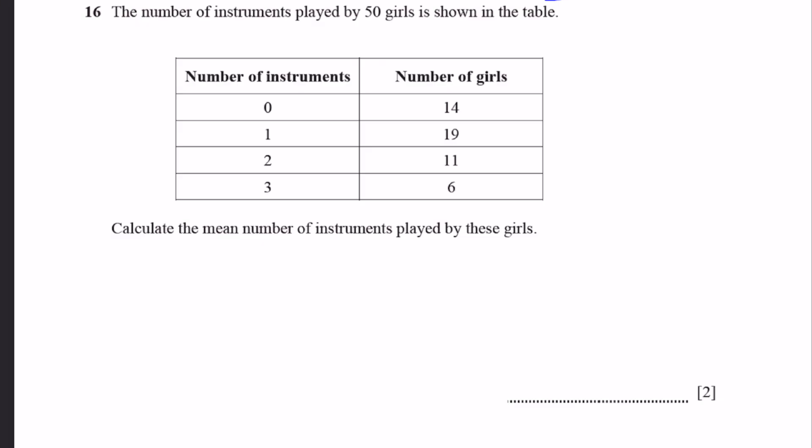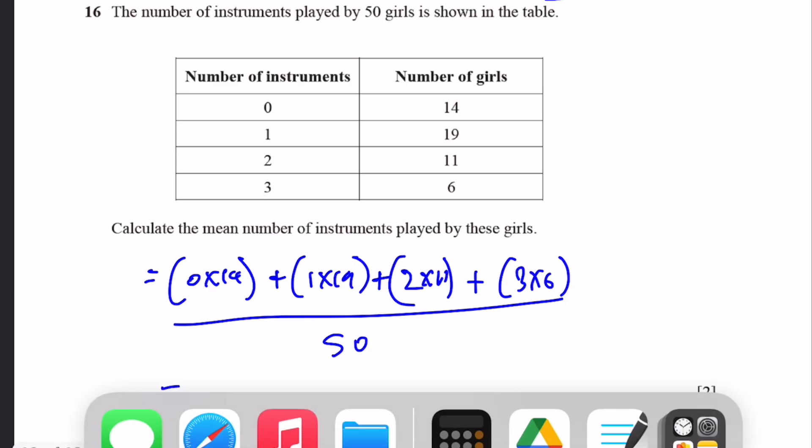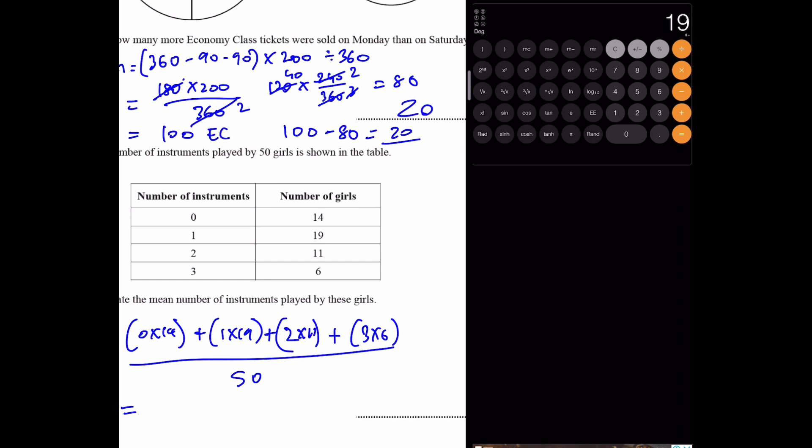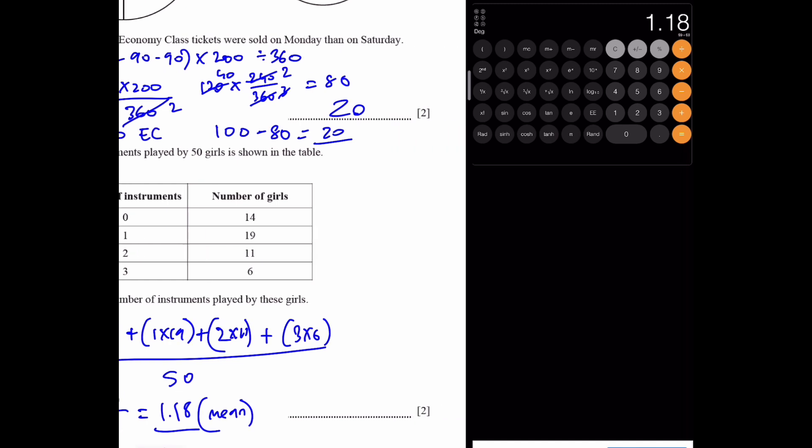Question 16. The number of instruments played by 50 girls is shown in the table. Calculate the mean number of instruments played by these girls. That'll be 0 into 14, which is 0, plus 1 into 19, plus 2 into 11, plus 3 into 6, divided by the total number, which is 50. Let's get our calculator out. We have 0, plus 19, plus 22, plus 18. We have 59, by 50, which equals 1.18 instruments played by the girls in the mean average.